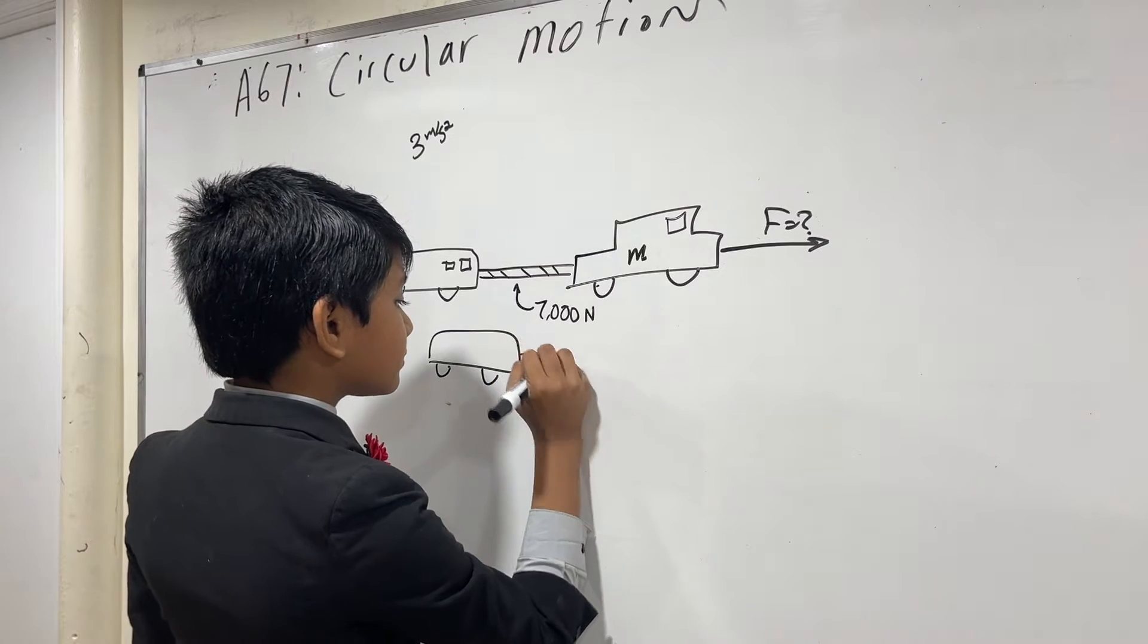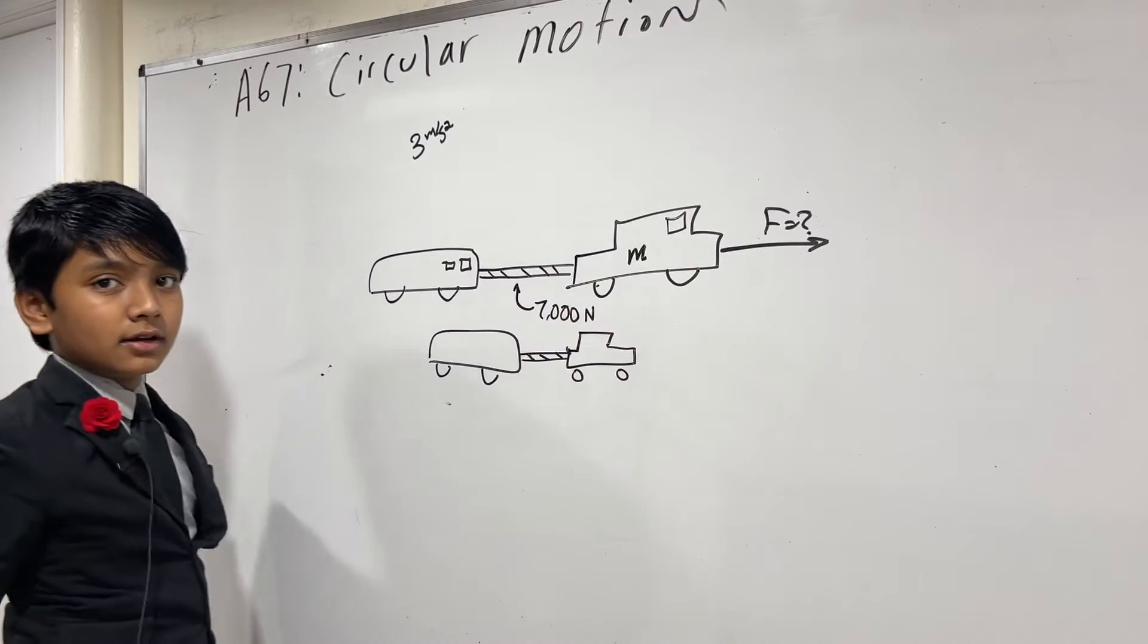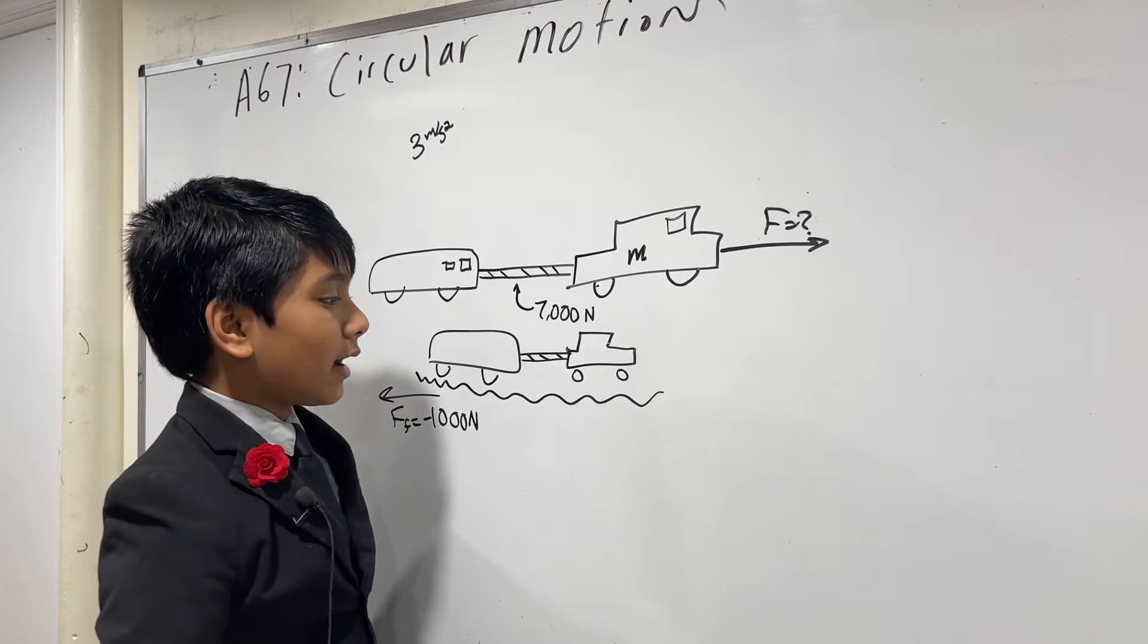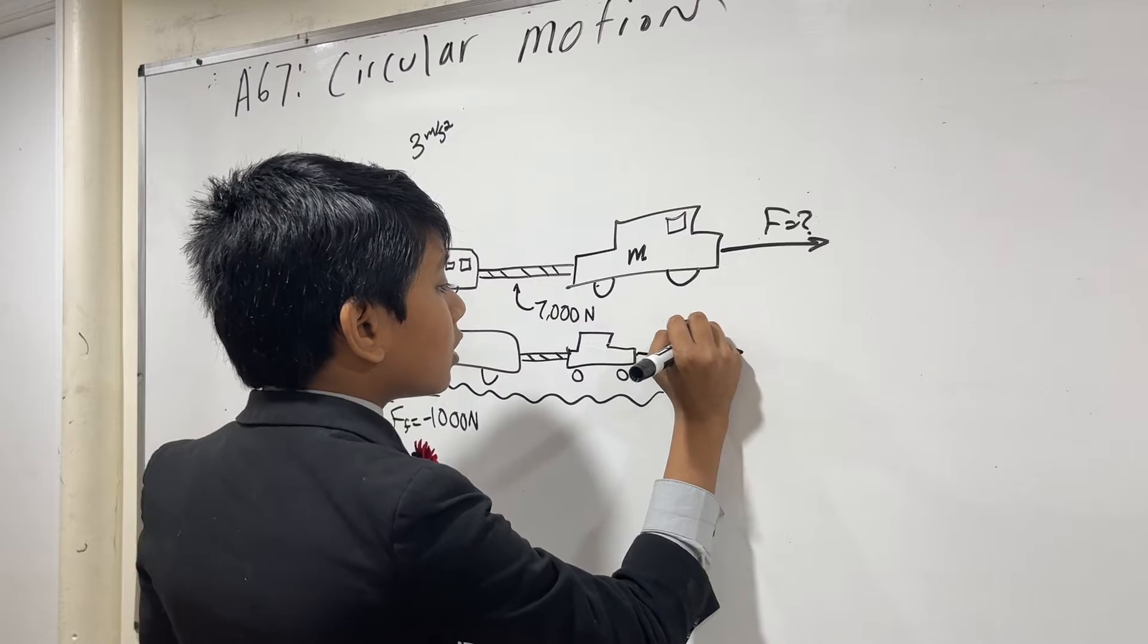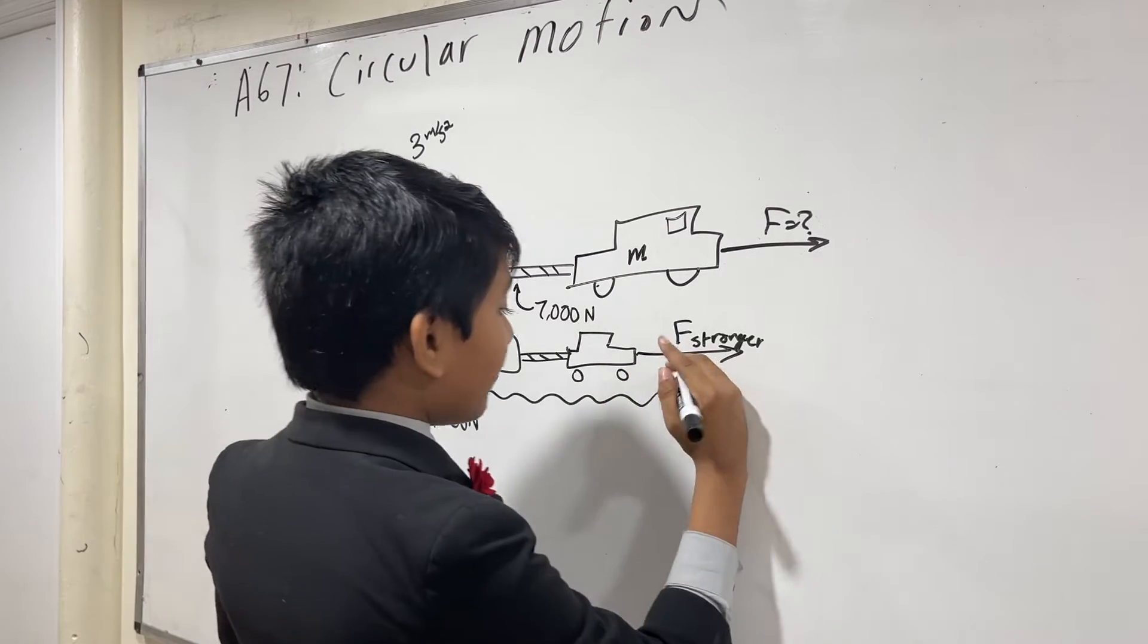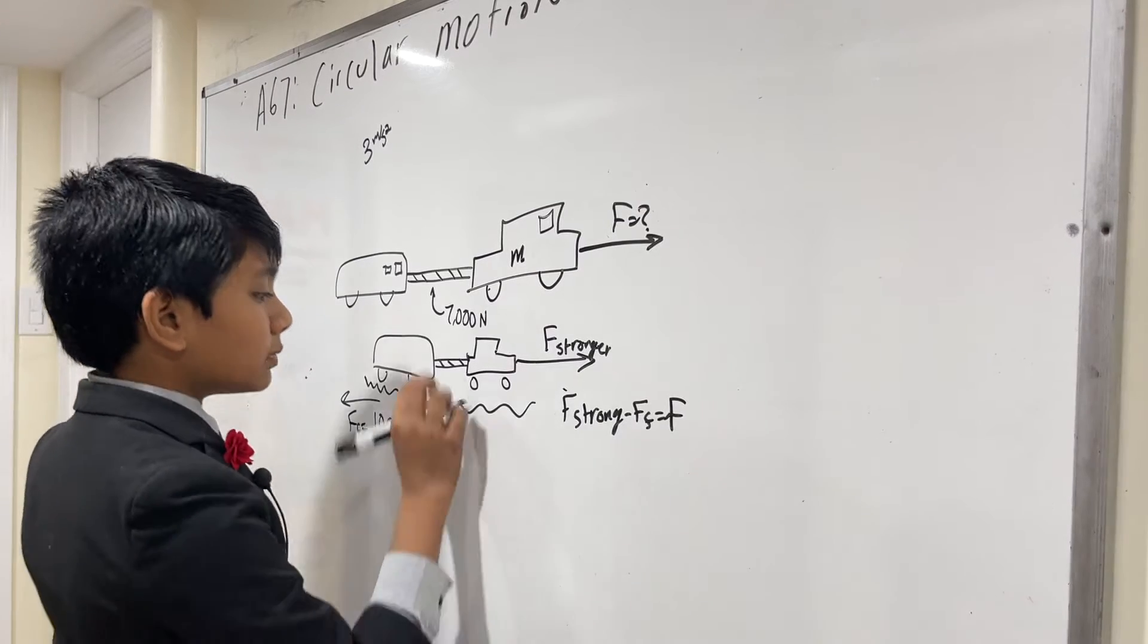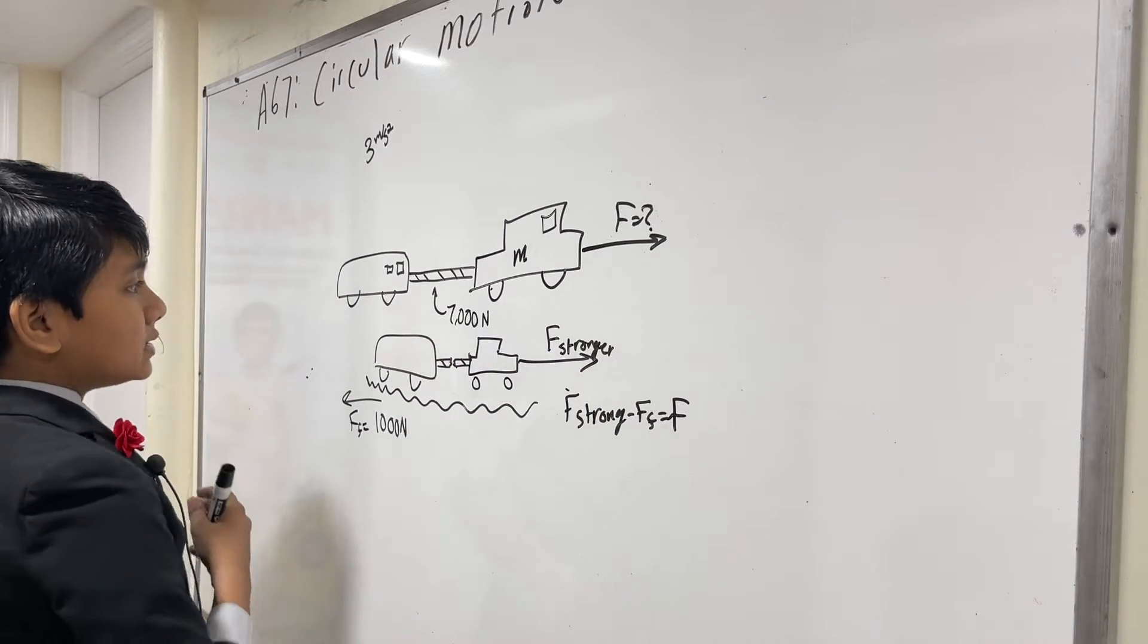And in this rough terrain, let me just draw it like this. Okay, that doesn't look like a car. That looks like a Tetris piece. So, in this rough terrain, there is a force of friction that retards with a force of minus 1,000 newtons in the negative x direction. So, the Tesla applies a stronger force. Yes, I'm titling it F stronger. So, the Tesla applies a stronger force so that F stronger minus FF will be equal to our original F that it was pulling with. However, when this F stronger is applied, the rope breaks in two.